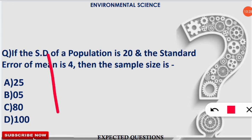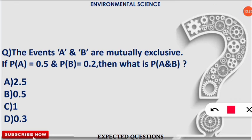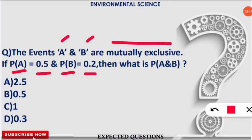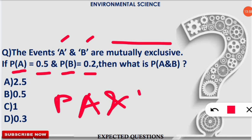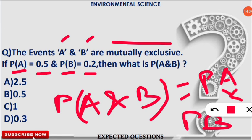The next question is from probability. Events A and B are mutually exclusive. The probability of A is 0.5 and the probability of B is 0.2. Find P(A and B). For mutually exclusive independent events, P(A and B) = P(A) × P(B) = 0.5 × 0.2 = 0.10.